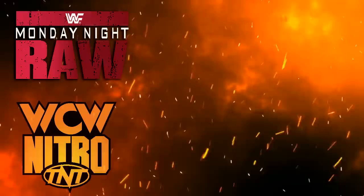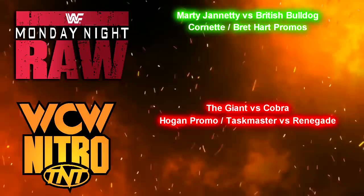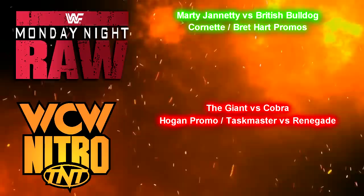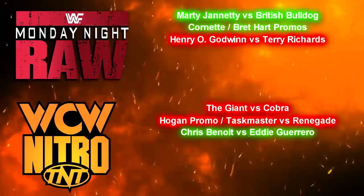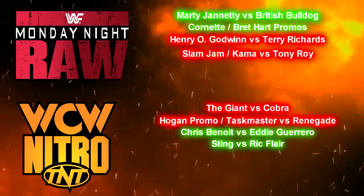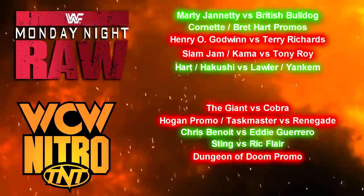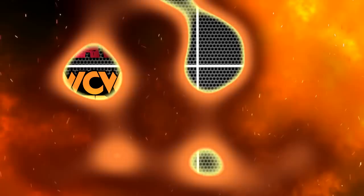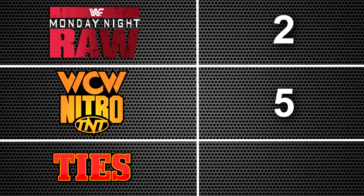So Raw scored the first point with the British Bulldog vs Marty Jannetty match. Jim Cornette scored Raw another point thanks to his mic work, while WCW gave us a rather poor Taskmaster vs Renegade match. Eddie Guerrero and Chris Benoit delivered the goods once again to give Nitro its first point of the evening. Sting and Ric Flair gave us the match of the week while Shawn Michaels phoned into Raw. Finally, the Raw main event had a questionable finish but I still thought it was a better viewing experience than the Dungeon of Doom promo. Raw gets its second win here on Reliving the War, meaning our overall scores are now 2 points for Raw, 5 points for Nitro, and we've had 2 ties. In the weekly television ratings, Raw got the win, scoring a 2.6, while Nitro managed a 2.